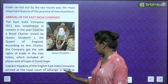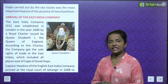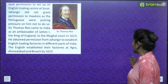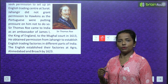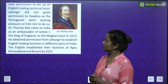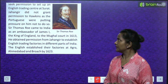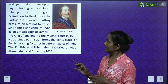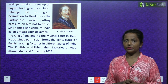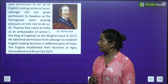Captain Hawkins came to Jahangir's court in 1608 to seek permission to set up an English trading center at Surat. However, Jahangir did not grant permission to Hawkins as the Portuguese were putting pressure on him not to do so. Sir Thomas Roe came to India as an ambassador of James I, the King of England, to the Mughal court in 1613.